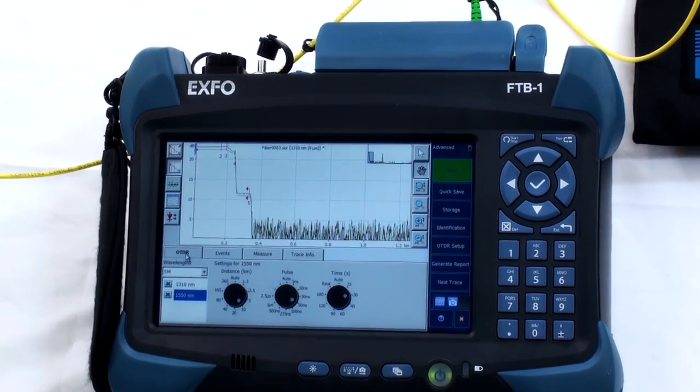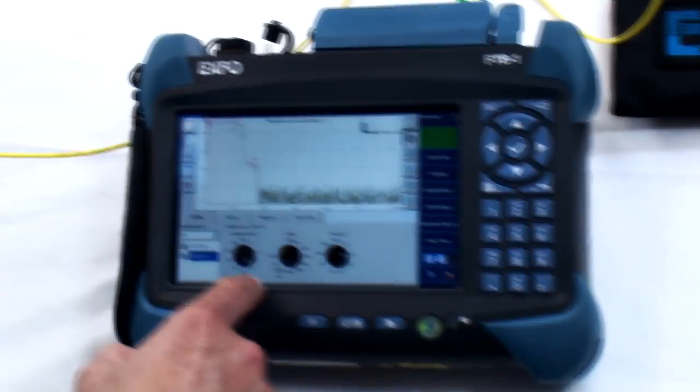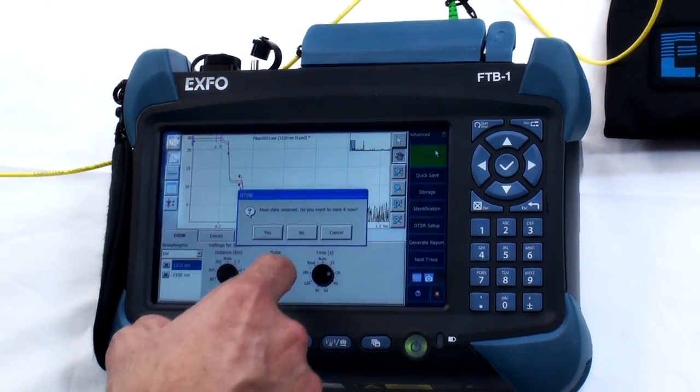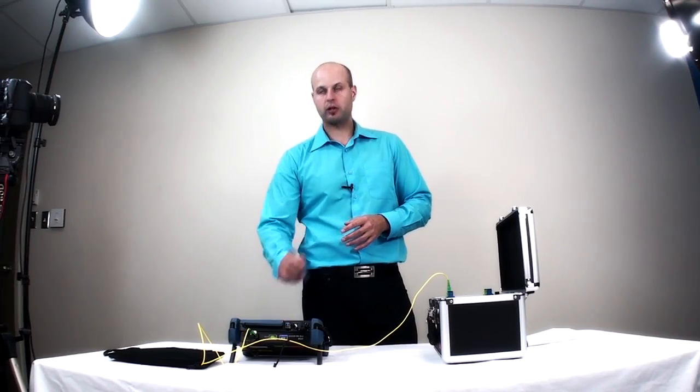However, it decreases the resolution, therefore increasing the dead zone. So let's use a 500 ns pulse width, save the trace and start a new acquisition.